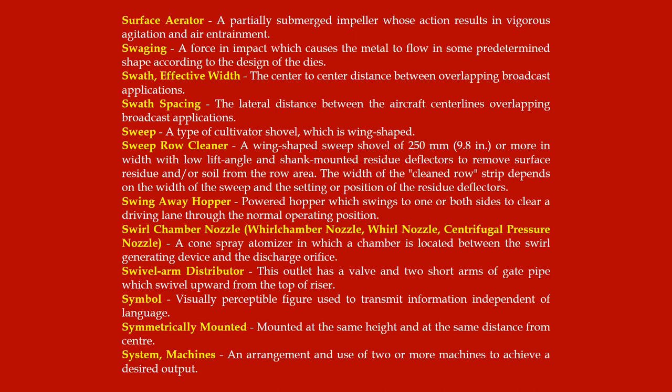Sweep: a type of cultivator shovel which is wing-shaped. Sweep row cleaner: a wing-shaped sweep shovel of 250 mm (9.8 inches) or more in width with a low lift angle and shank-mounted residue deflectors to remove surface residue and/or soil from the row area; the width of the cleaned row strip depends on the width of the sweep and the setting of the residue deflectors.